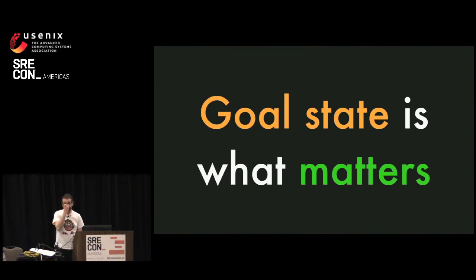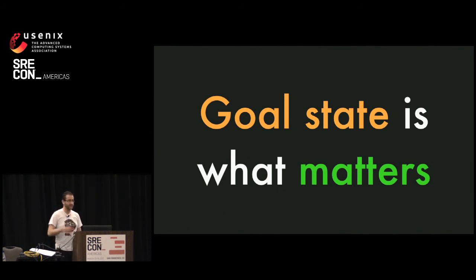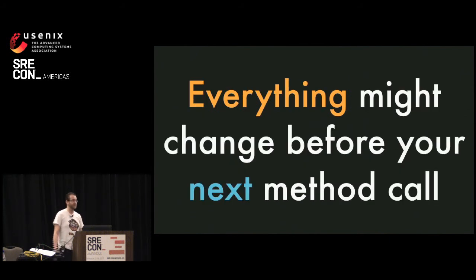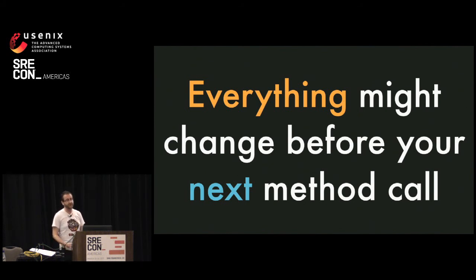My second reckon is that goal state is what matters. Orchestration systems are dealing with a constant state of flux. It is no good just firing off API calls and hoping they will work the system into the right state — you need to set a desired state and have your system work towards it, continually checking whether or not you've reached it. Everything might change before your next method call. You can't assume that just because you saw a process running five seconds ago it's still going to be there. Processes die, machines reboot, and the network is not reliable. You have to build for that.